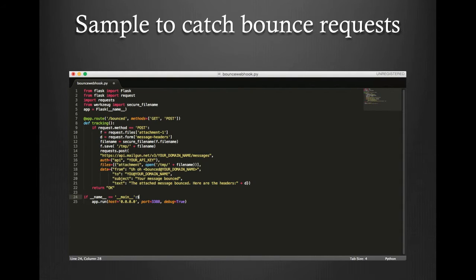Here's a test script for capturing bounce requests. What this script does is capture any POST requests sent to the bounce route for your URL. It then captures the attachment, which contains the original bounce message, and the message headers. It will then save the attachment to a temporary file and send an email to a static address with the message headers in the body and the file attached. With some small adjustments, you can configure the script to pull the original sender of the message and send the email to that address instead — really useful if you're managing multiple senders and want to notify them of bounces.